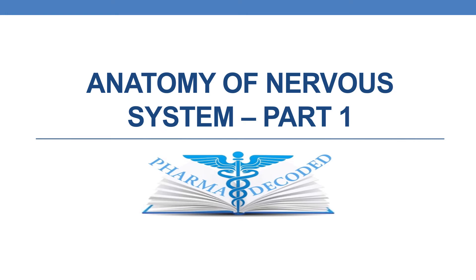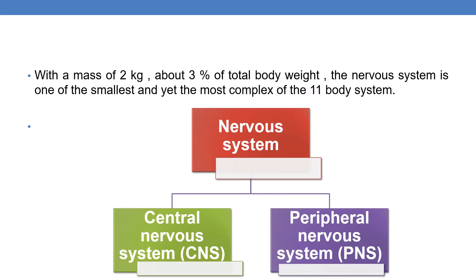Hello everyone. Now let us discuss Anatomy of Nervous System Part 1. First of all, coming to the Nervous System — with a mass of about 2 kilograms and about 3% of the total body weight, the Nervous System is one of the smallest and yet most complex of the 11 body systems. The Nervous System is broadly categorized into 2 types: Central Nervous System and Peripheral Nervous System.